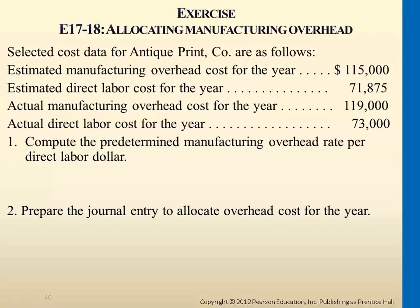So how do we understand this $1.60? It's the indirect cost assigned to the job. So for every dollar of direct labor cost incurred, there will be $1.60 assigned to that particular job. So if there's $10 incurred, there will be $16 of indirect cost. $100, there will be $160.